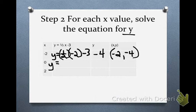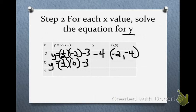Okay, let's solve it again. y equals 1 half times 0 minus 3. 1 half of 0 is still 0, so my y is negative 3. I'm going to write those as my coordinates. 0 and negative 3.